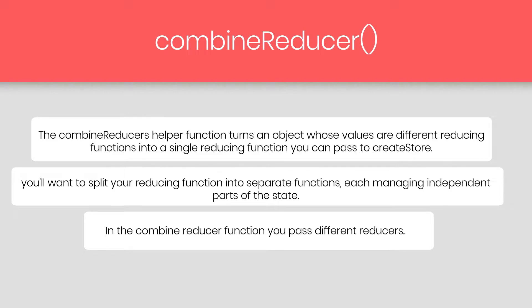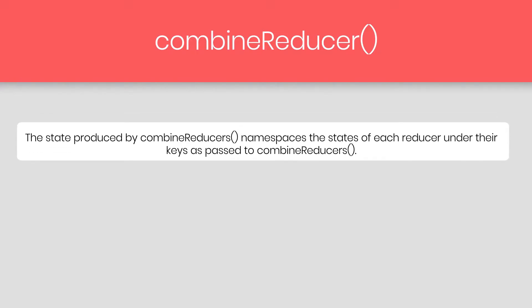In the Combined Reducer function, you pass the different reducers. The resulting reducer calls every child reducer and gathers their results into a single state object. The state produced by the Combined Reducer function namespaces the state of each reducer under their keys as passed to Combined Reducers. Let me explain what this means — take a look at this Combined Reducer method.